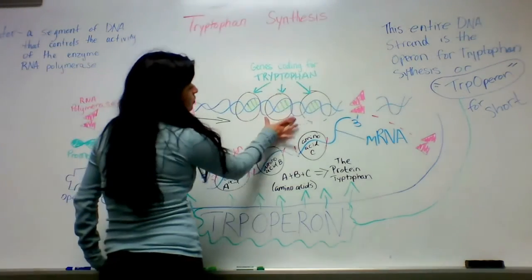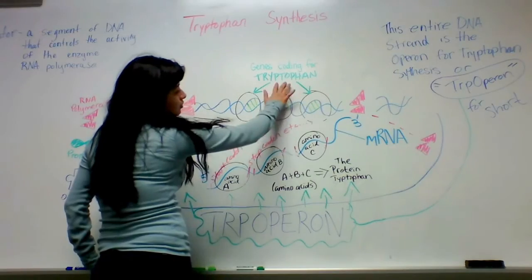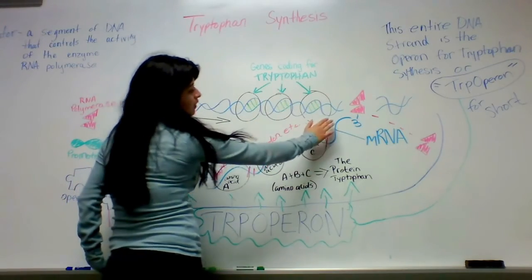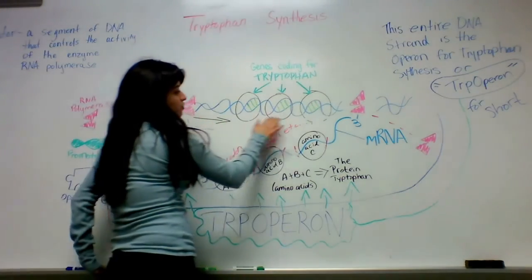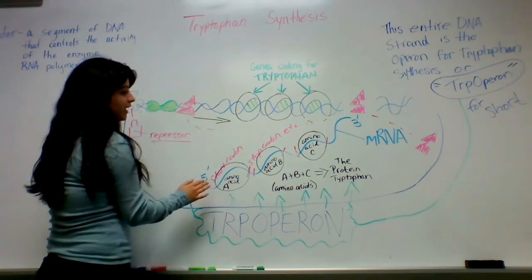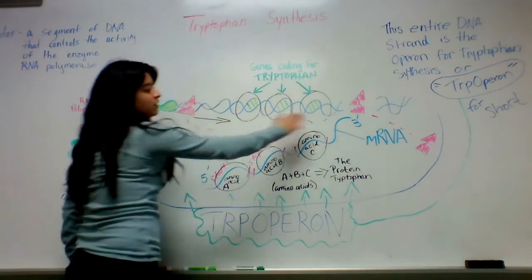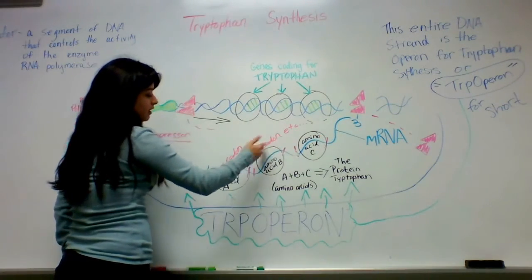These are the three genes coding for tryptophan, and the RNA polymerase just runs along the strand, and as it's running along, it's synthesizing mRNA.